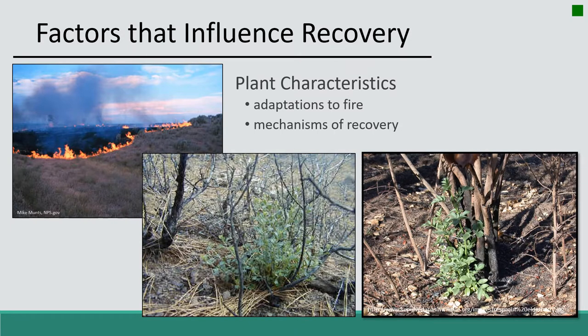Another recovery mechanism is sprouting after fire. Some plants can sprout from the base and others cannot, and this largely determines how well a plant can survive fire. Sprouting can be stimulated by chemicals released during fire or by canopy opening that allows more light to reach plants. Sprouting also depends on age. In aspen communities, for example, sprouts come from the roots following a fire.